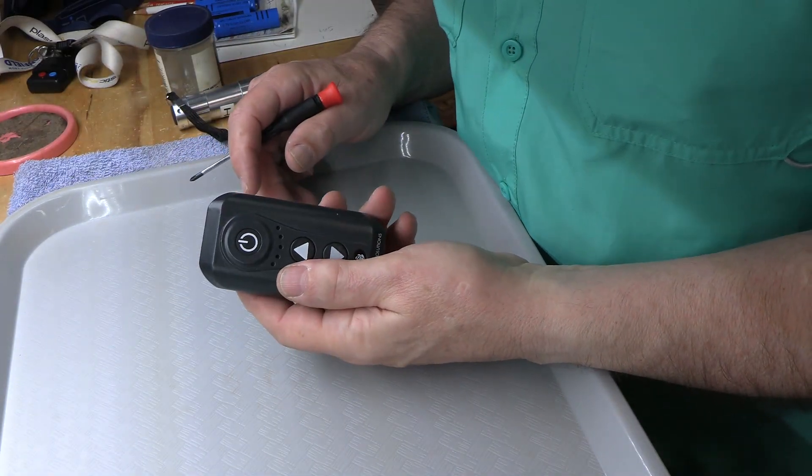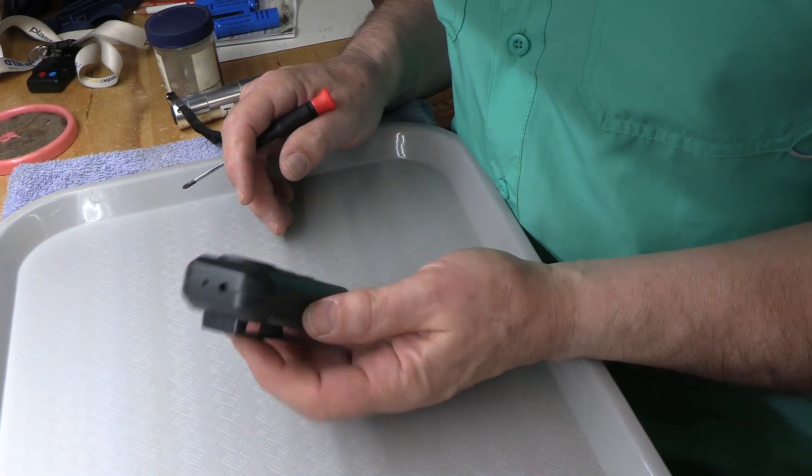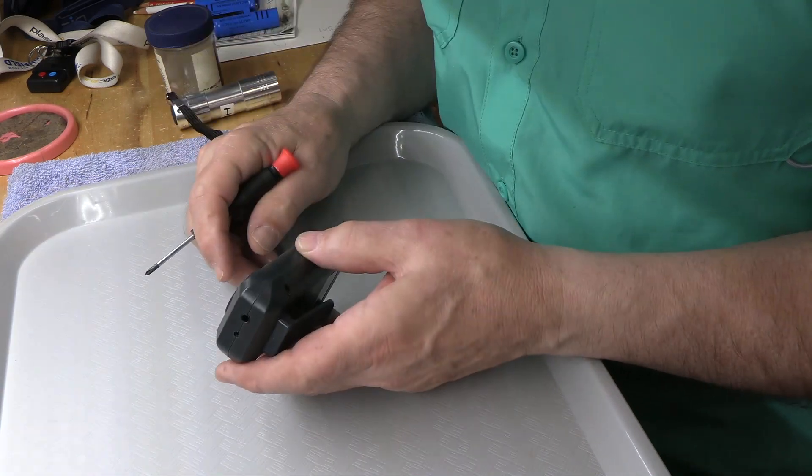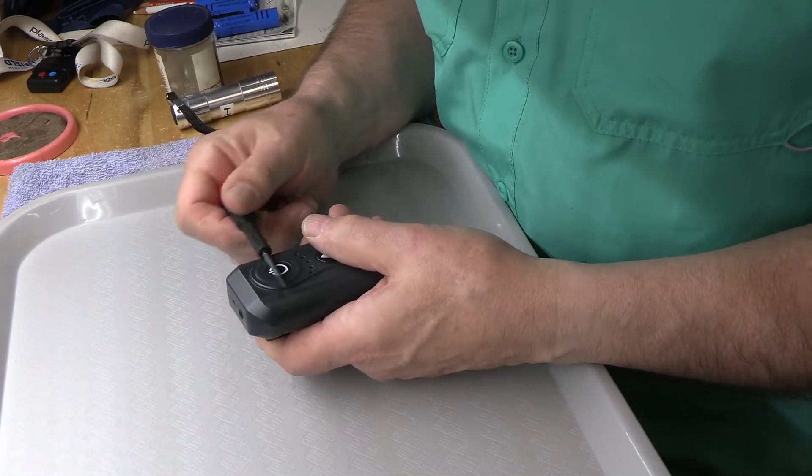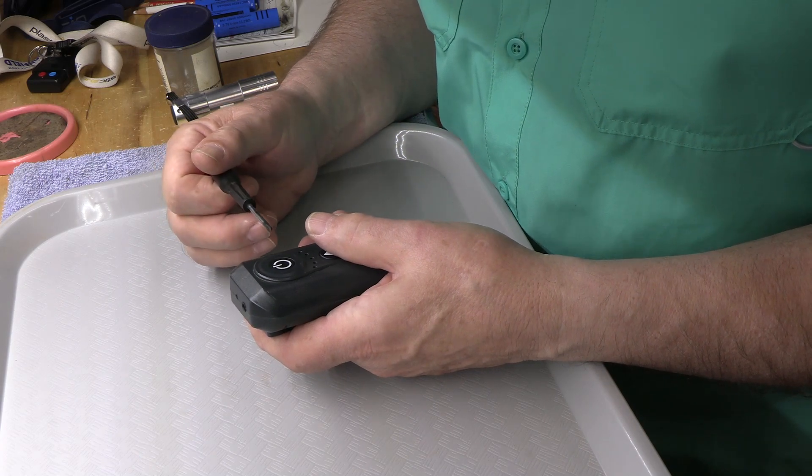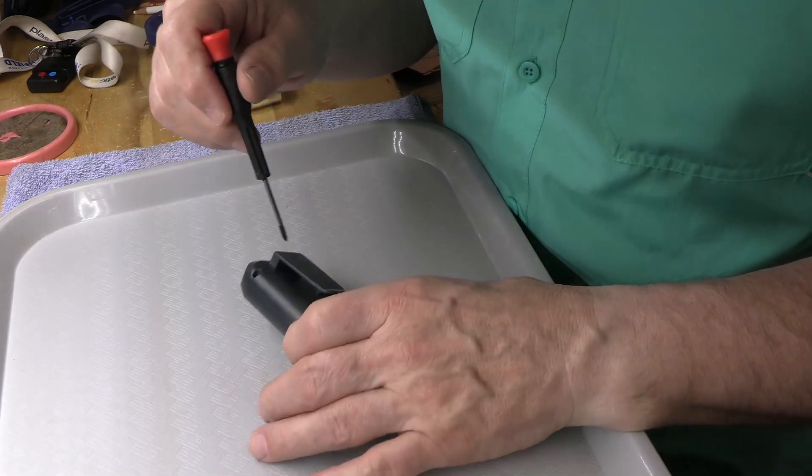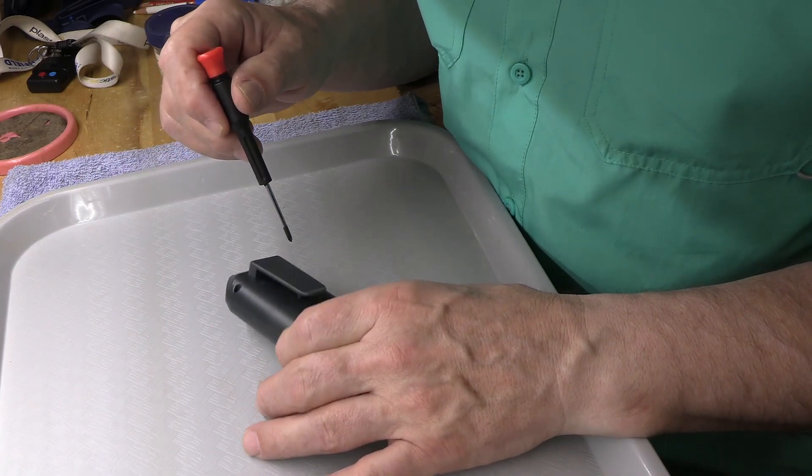So here's a battery pack, and there are many that are similar to this. Inside here are probably some rechargeable batteries because we recharge it all the time. We'll be able to fix it. They're either going to be nickel metal hydride, which have memory and are not great, or lithium. This is a relatively new battery pack, so it probably has lithium.